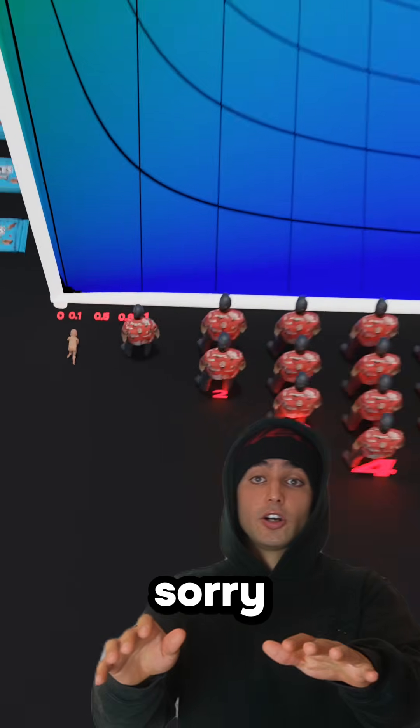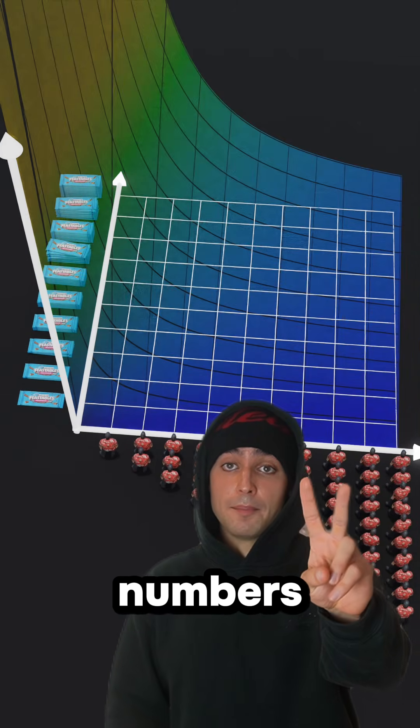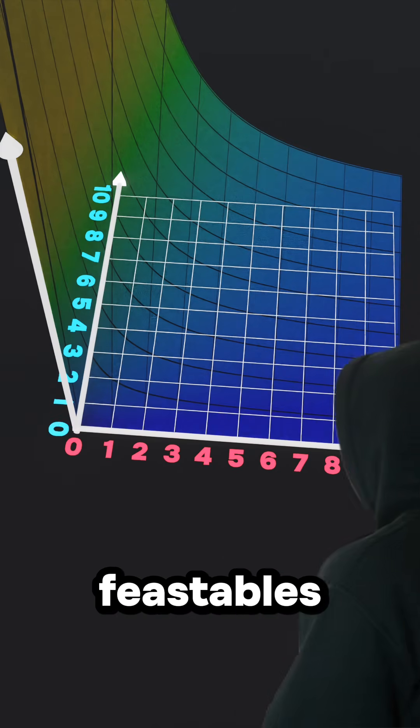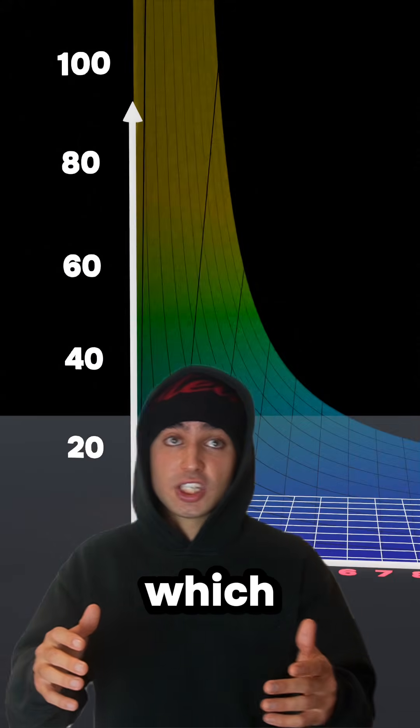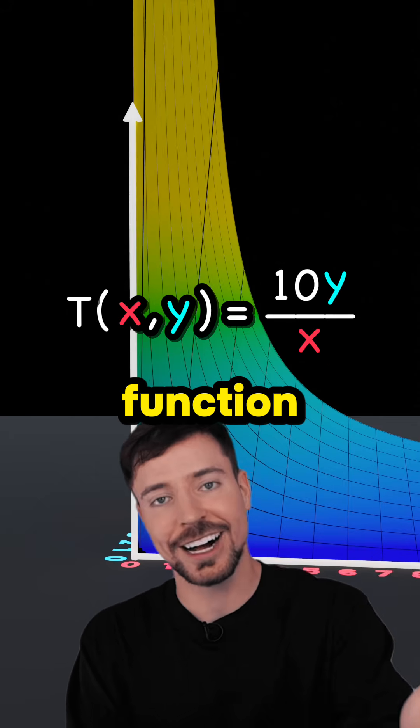Okay, sorry. So basically what you're saying is this whole surface shows how changing two numbers—people and Feastables—affects the output, which is the feasting time. And that is what you call a multi-variable function.